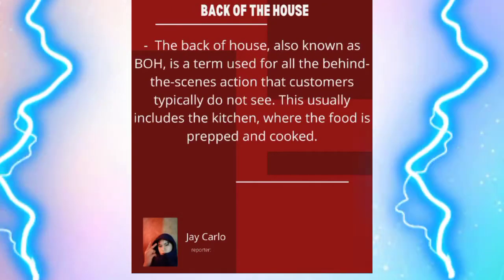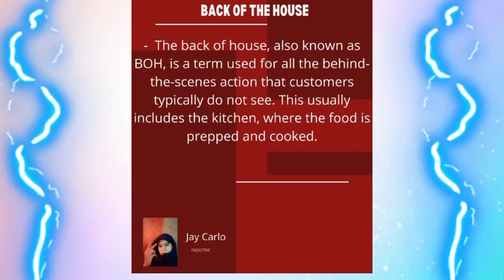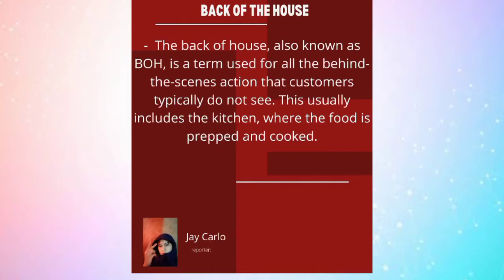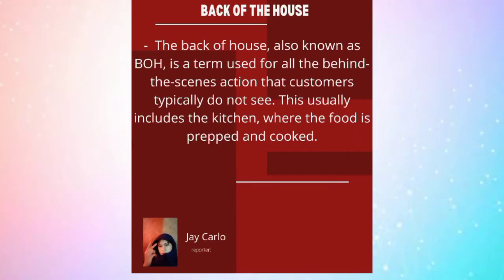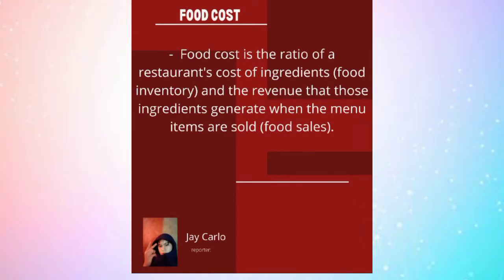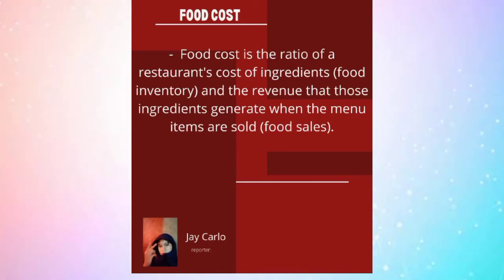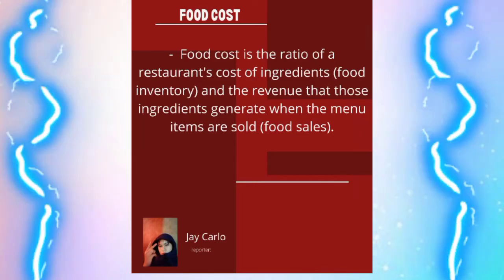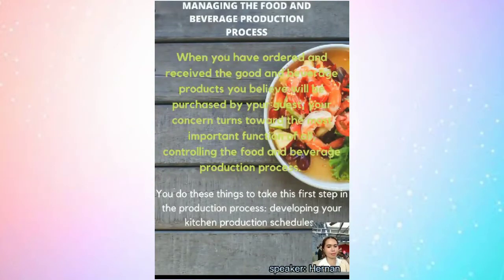The back of the house, also known as BOH, is a term used for all the behind-the-scenes action that customers typically do not see. This usually includes the kitchen where food is prepared and cooked. Food cost is the ratio of a restaurant's cost of ingredients and food inventory to the revenue that those ingredients generate when menu items are sold.